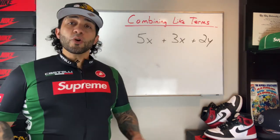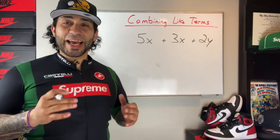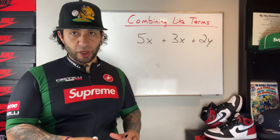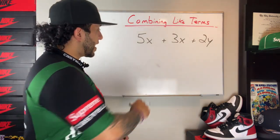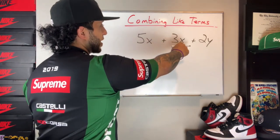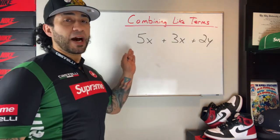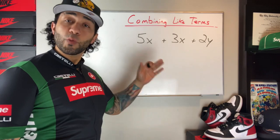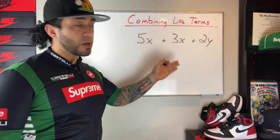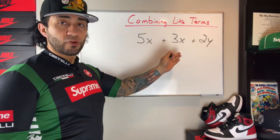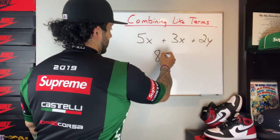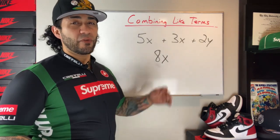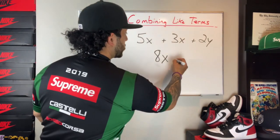In order for a term to be able to be combined, it has to have a common variable and exponent in certain instances, which we'll see in a moment. In this example, we have 5x plus 3x plus 2y. Now because the 5x and the 3x have the same variable of x, we can combine them. 5 plus 3 is 8, which means 5x plus 3x is 8x. We don't have any other terms that have the variable of y, so all we're going to do is bring down that 2y.